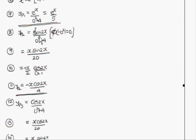For yp2: yp2 = sin2x/(D² + 4). Here b = 2, b² = 4, and -b² = -4. Replacing D² with -4: -4 + 4 = 0. The denominator is 0, so multiply the numerator by x: x·sin2x, and differentiate the denominator. The derivative of D² + 4 is 2D, giving x·sin2x / 2D.